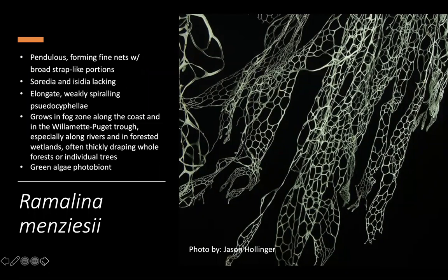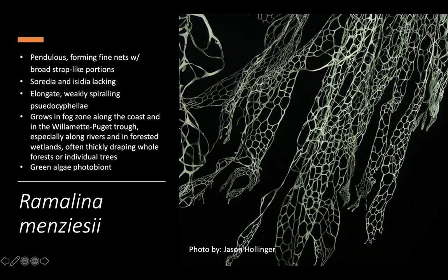The beautiful Ramalina menziesii is a delight to see in the field. It's a pendulous, net-forming lichen, almost like fishnets, lacking soredia and isidia. It does have elongate, weakly spiraling pseudocyphellae — a feature also observed on certain hair lichens. As the lichen grows, the cyphellae elongate and stretch with the growing straps. It's most commonly found in the fog zone along the coast from Northern California, Oregon, and parts of Washington, and also in the Willamette-Puget Trough along rivers and forested wetlands, often thickly draping whole forests. Another green algae photobiont.